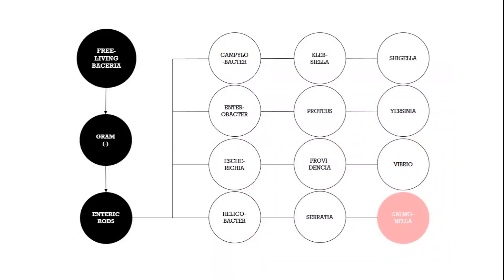Salmonella is a gram-negative bacteria and belongs to the family Enterobacteriaceae, with various genera like Campylobacter, Enterobacter, Helicobacter, Klebsiella, Shigella, Vibrio and others. Bacteria of this family are routinely found in the GI tract of humans or other animals, but many also have alternative habitats in soil or water.